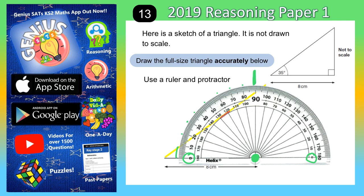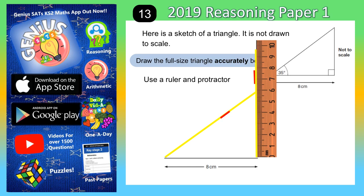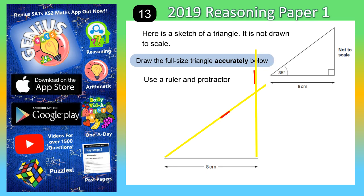Once you've got the mark in, move the angle measure away and there's your red mark. Bring your ruler back on and then draw a line to your red mark back down to the 8 centimetre line. And there you have your finished triangle.